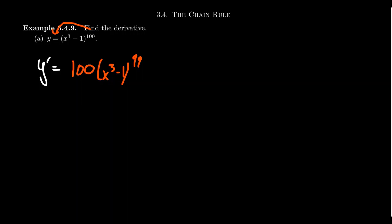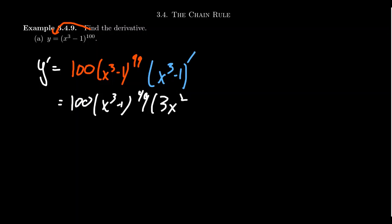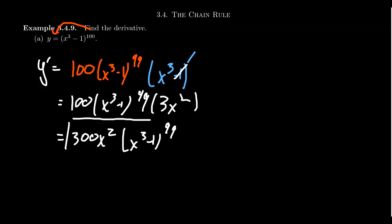What goes inside — what are we raising to the 99th power? The inner function we already had, x cubed minus 1. Now taking the derivative of that inner function, by the power rule we get 3x squared. The derivative of the constant is 0, so it disappears. Putting the 3 and the 100 together, the derivative is 300x² times (x³ - 1)^99. It's to a great advantage to leave derivatives factored. Multiplying that out is not worth our time, especially at the 99th power. Leave it in this factored form.